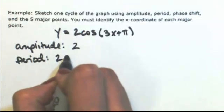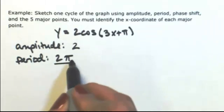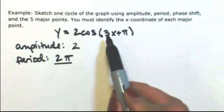The period is found by taking the original period of cosine and dividing it by whatever is in front of x, which is 3.